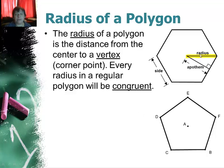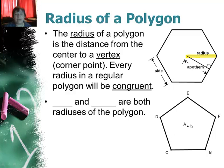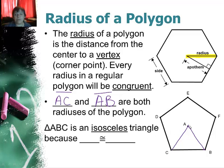In this case, there's a radius. In this case I've got AC and AB are both radii of this polygon, which means that this triangle ABC is isosceles because AC is congruent to AB.